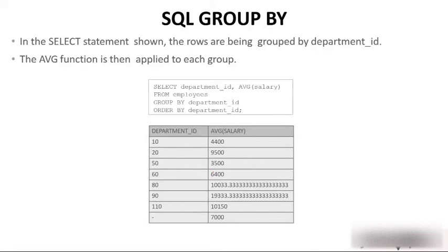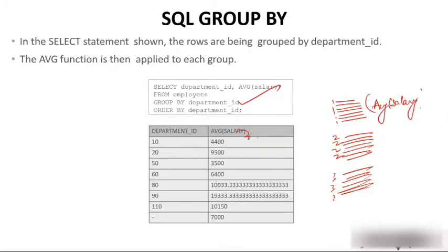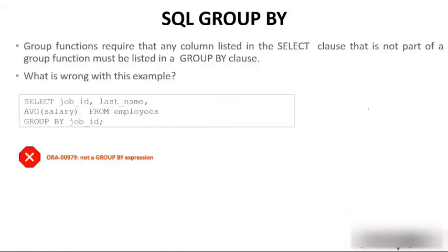In this SELECT statement, the rows are being grouped by department_id. The average function is then applied — first we collect all employee records for department 1, then for department 2, and so on. Then we apply the average salary function to each group. That is what we are actually doing.